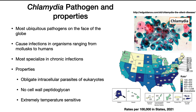Chlamydia is the most ubiquitous pathogen on the face of the globe — chlamydia in general, not just the sexually transmitted disease. It causes infections in organisms ranging from molluscs to humans, and most species specialize in chronic infections that go on for a long period of time. It is an obligate intracellular parasite of eukaryotes — it cannot exist on its own, so it's almost more like a virus. It has no cell wall peptidoglycan and is extremely temperature sensitive, since it grows inside host cells and is accustomed to a very consistent environment.